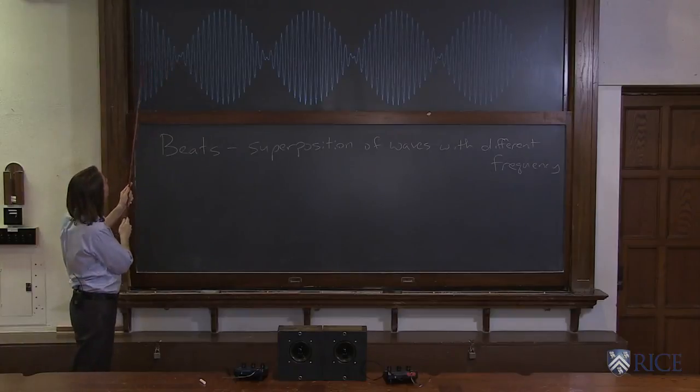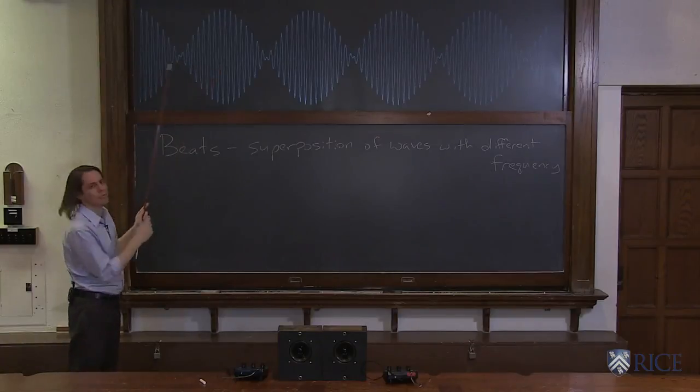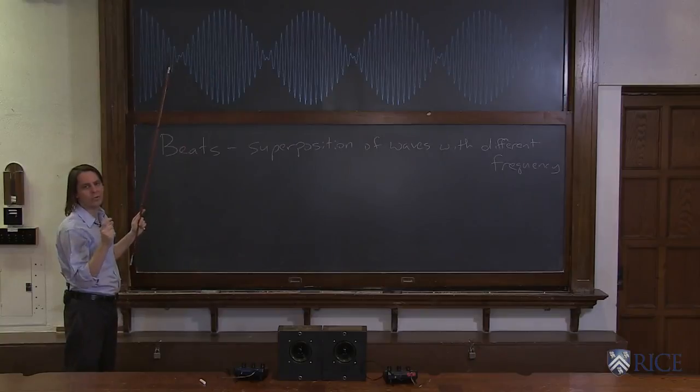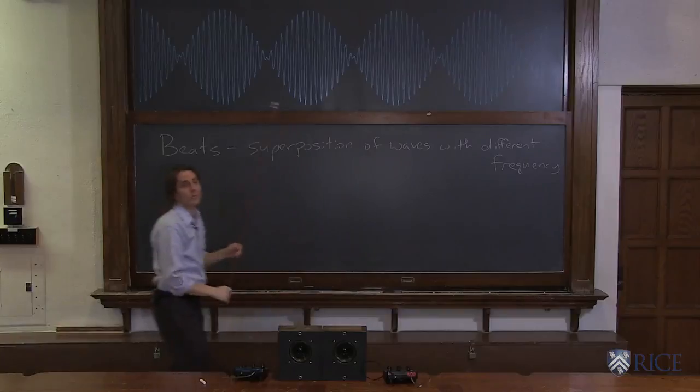The result of adding them makes a fast frequency that's about the same. It's really the average of the two original frequencies. But then it's modulated by this slow sinusoidal shape like this. And if you make this a sound, what does it sound like?